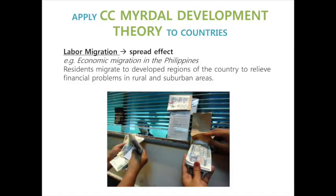Upon this theory, Myrdal proposed three major contributions: labor migration, capital movement, and difference in trade facilities.